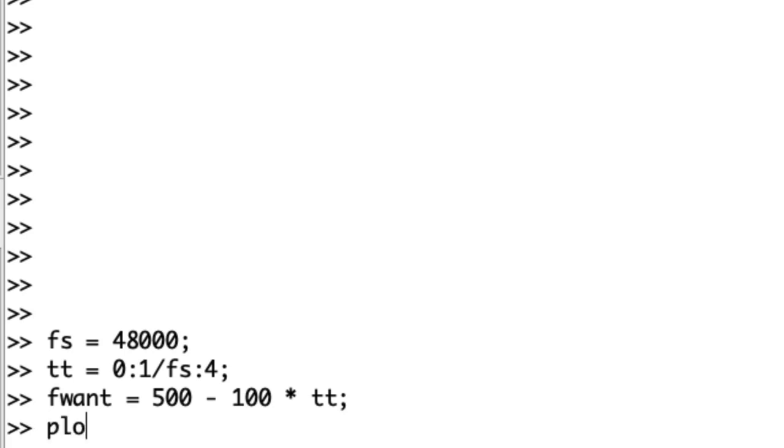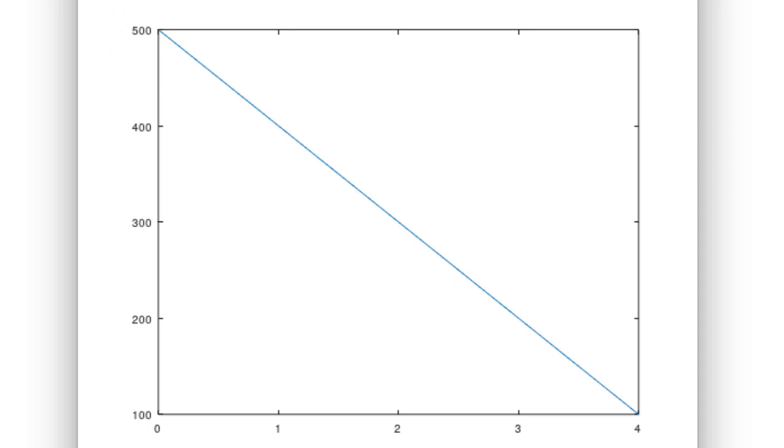So ideally, this should go from 500 to 100. And just to emphasize that, let me plot f1. So 500 going down to 100. That's what I want.